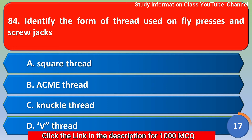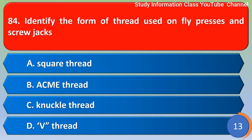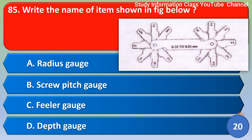Next question: Identify the form of thread used on fly presses and screw jaws — option A: square thread, option B: acme thread, option C: knuckle thread, option D: Vee thread. The correct answer is option A, square thread.